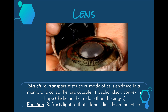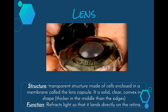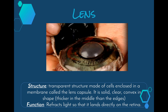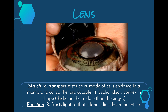Next we have the lens, which is probably one of the most important parts of our eye. It is a transparent structure made up of cells enclosed in a membrane called the lens capsule. When you remove the lens from a dissected bull's eye it actually remains in that solid shape — it's solid, clear, and convex, meaning it is thicker in the middle than at the edges, giving it a football shape. Its function is to refract light so that it lands directly on the retina, creating a clear image.